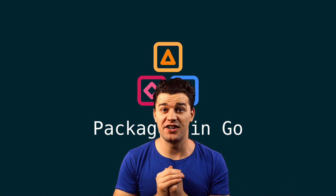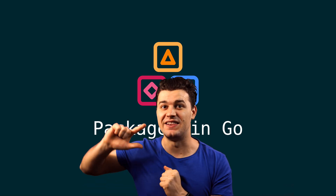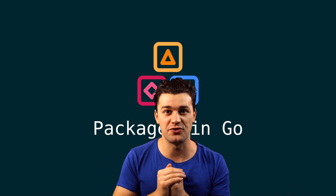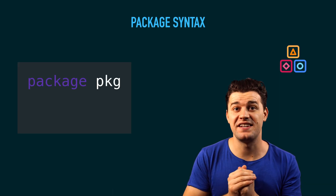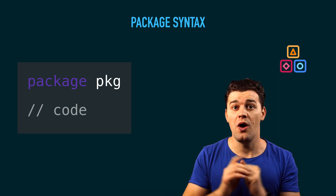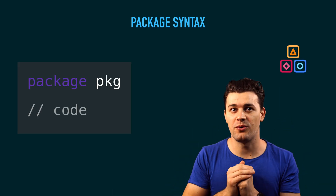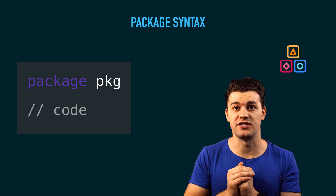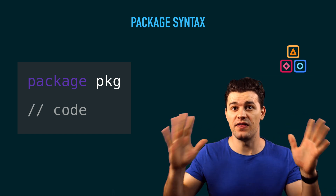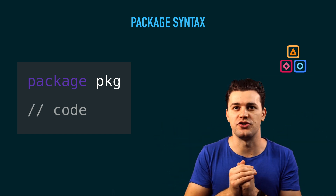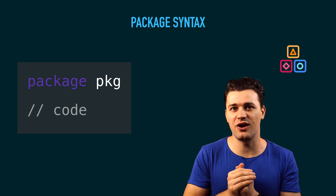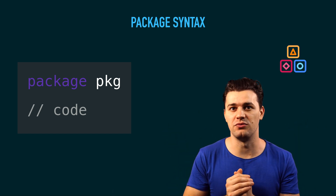Now that I've shown you where exactly the repository is, let's jump straight into this tutorial. When you create a file with the extension .go, the only required thing you have to put inside it is the package declaration. You have to say this file belongs to a certain package — that's the only required thing as soon as you create a .go file.